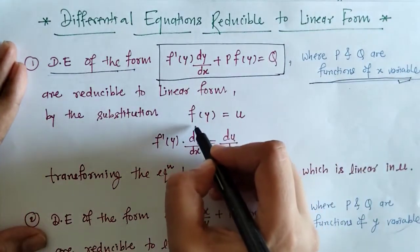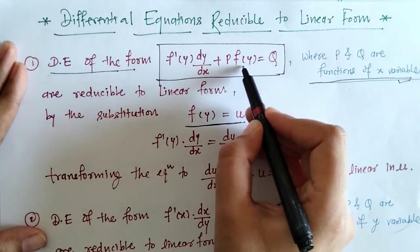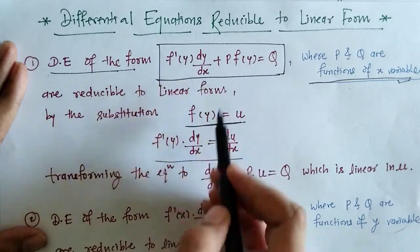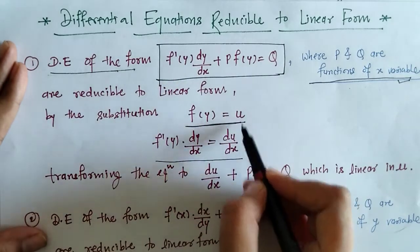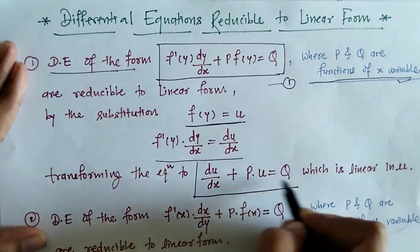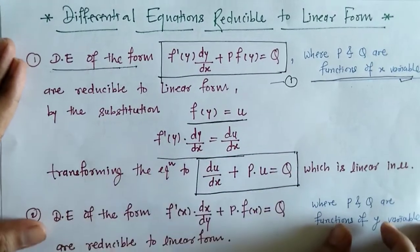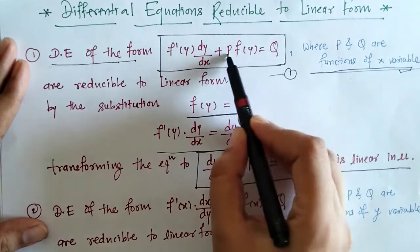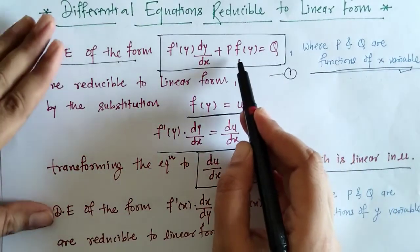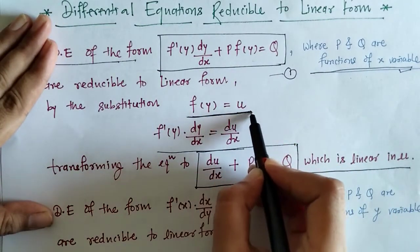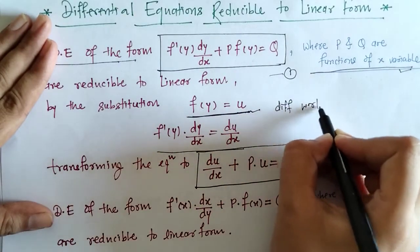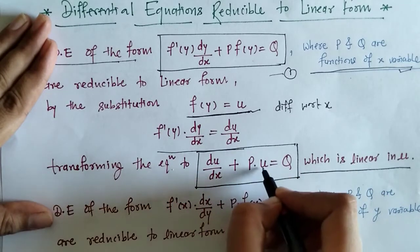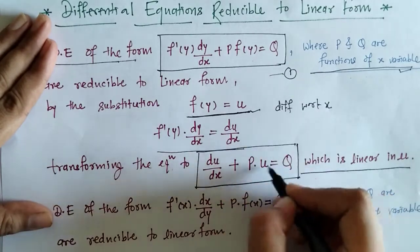To reduce to linear form, we substitute f(y) = u. Differentiating with respect to x gives f'(y)·dy/dx = du/dx. Putting both values into the original equation, we get a new linear differential equation in the variable u, where u is the dependent variable and P and Q are functions of x.